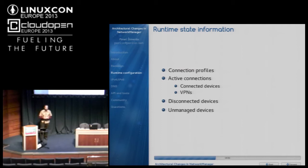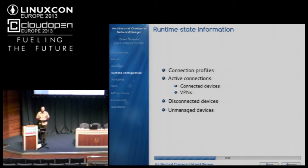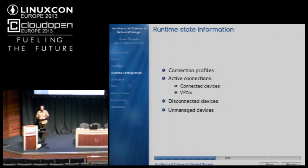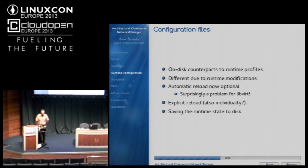There is some notion about active connections because they have attributes that don't belong to configuration stored on disk. For example, a list of dynamic addresses doesn't really belong to on-disk configuration, but is kept at runtime in NetworkManager. The same applies to the list of DNS servers taken from DHCP and so on — many examples of data that is important, sometimes needs to be queried by other tools, but doesn't belong to the on-disk configuration. There are also questions about the behavior of disconnected devices and unmanaged devices.